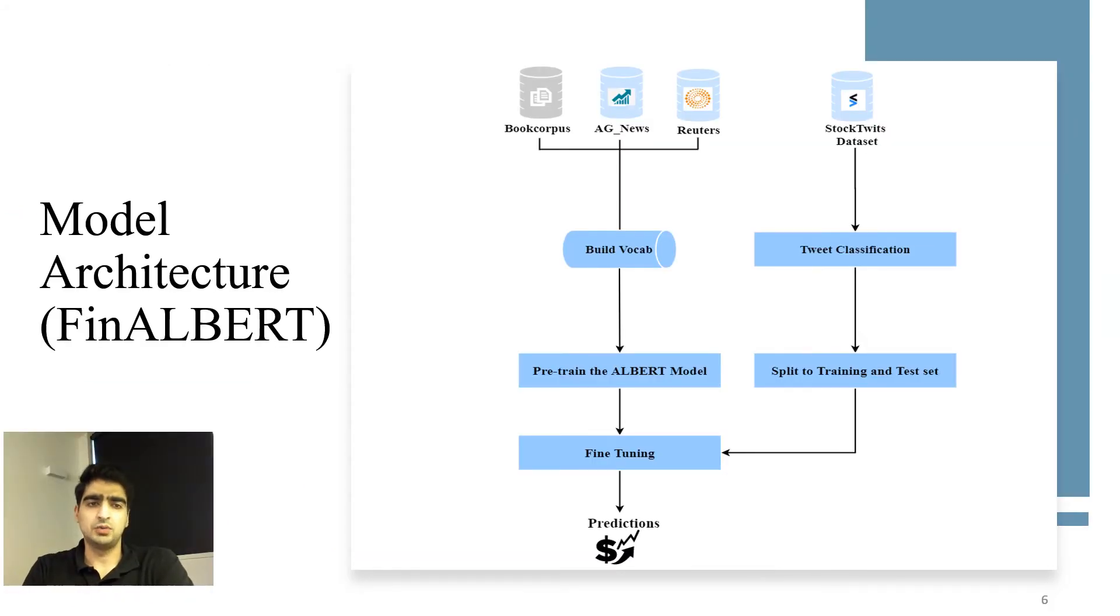Now let's talk about FinALBERT model architecture. To pre-train the FinALBERT model, we considered three external datasets. Book Corpus and AG News are provided by the Hugging Face. AG News of more than 1 million news articles collected from more than 2,000 news sources, which consists of news from various topics. And for our pre-training, we filtered to use only business news.